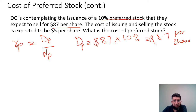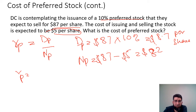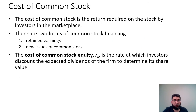The cost of issuing and selling this stock is expected to be $5 — these are the flotation costs and must be deducted from the expected sale price of $87. So $87 minus $5 gives us $82 net proceeds. Substituting these values: $8.70 divided by $82 gives us a cost of preferred stock of 10.6%.